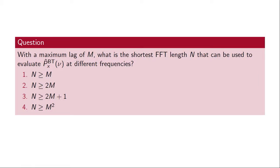If we use the FFT to evaluate different values of the Blackman-Tukey estimate and the estimate has a maximum time lag of M, the minimum FFT length must be greater than or equal to 2M+1. This is because we're evaluating a DTFT of a sequence of length 2M+1 — all values where the sequence could be non-zero — and the FFT must be at least this long to avoid circular convolution artifacts.